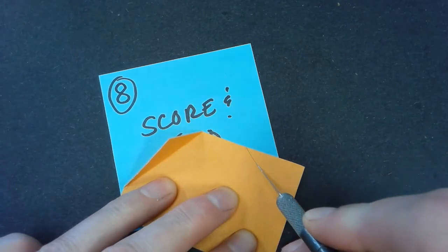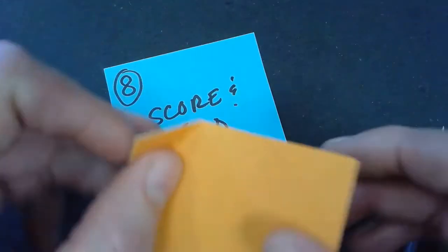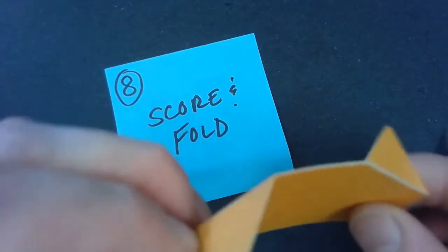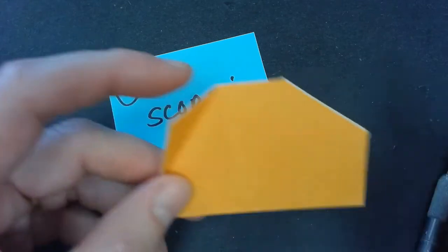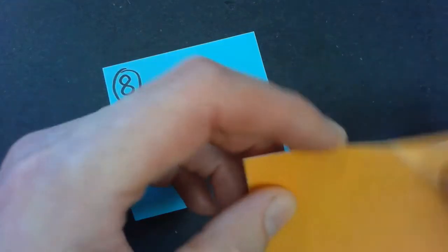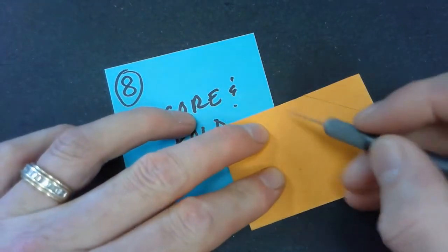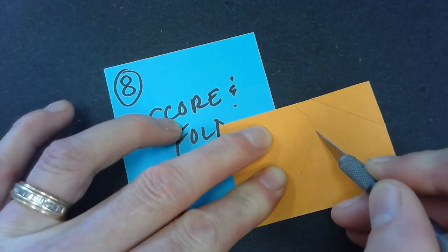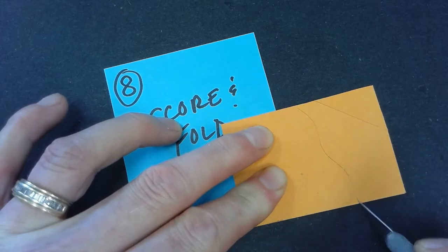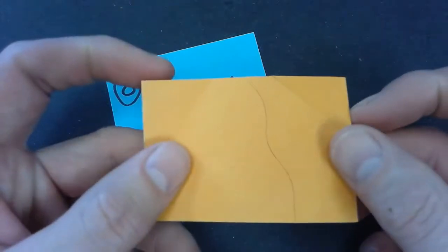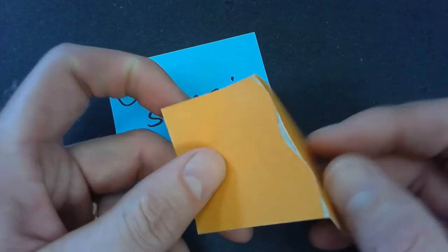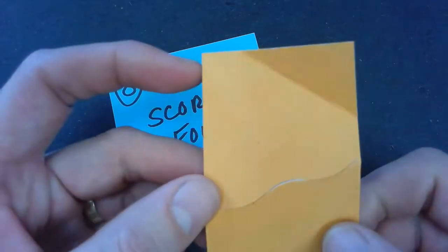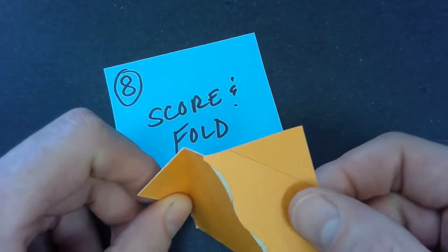The advantage here to scoring is that you are kind of telling the paper where to go. So if I want to just move over the curve and score, I'm bending that to create the curve that I want. That is scoring and folding.